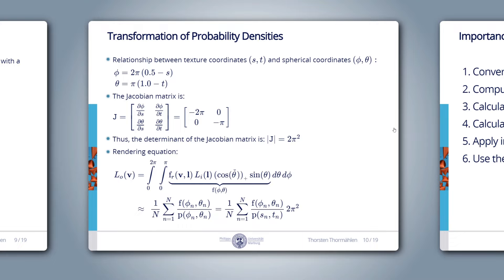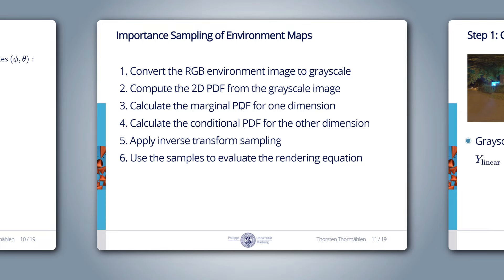Here are the steps we need to perform for importance sampling of environment maps: Step 1 — convert the RGB environment image to grayscale; Step 2 — compute the 2D PDF from the grayscale image; Step 3 — calculate the marginal PDF for one dimension; Step 4 — calculate the conditional PDF for the other dimension; Step 5 — apply inverse transform sampling; Step 6 — use the samples to evaluate the rendering equation. We will implement an OpenGL GLSL shader for each one of these steps.